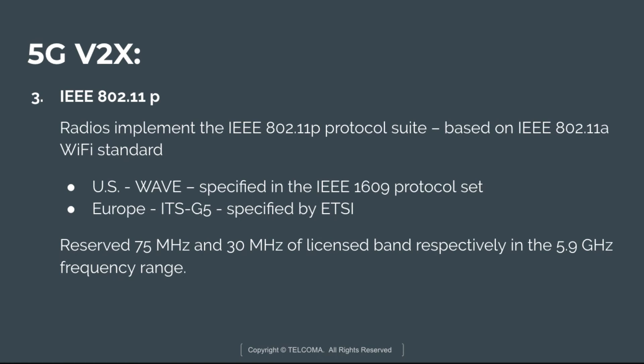For IEEE 802.11p, the radio implements the IEEE 802.11p protocol suite based on the IEEE 802.11a Wi-Fi standard. In the US, it is named WAVE and specified in the IEEE 1609 protocol set; in Europe, it is named ITS-G5 and specified by ETSI. It reserves 75 MHz and 30 MHz of licensed band respectively in the 5.9 GHz frequency range. The most prominent facilities are cooperative awareness — provided through Cooperative Awareness Messages (CAM) in Europe — and event-based emergency updates for hazardous situations, provided through Decentralized Environmental Notification Messages (DENM).